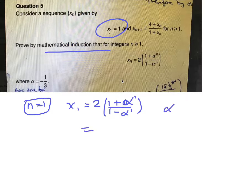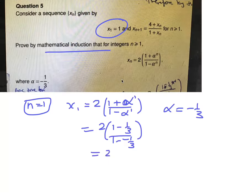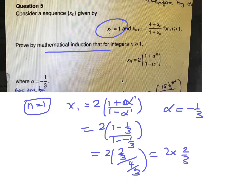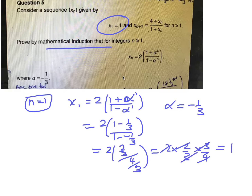So alpha is actually equal to minus a third. So it's 2 times (1 minus a third) over (1 minus minus a third), which is 2 times 2 thirds over 1 and 1 third, which is 4 thirds. So it's 2 times 2 thirds times 3 over 4, which equals 1, because it all cancels out.